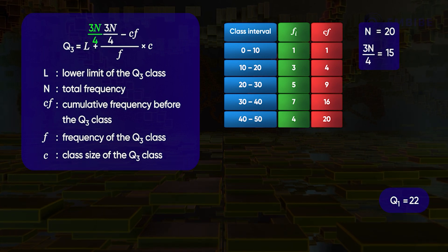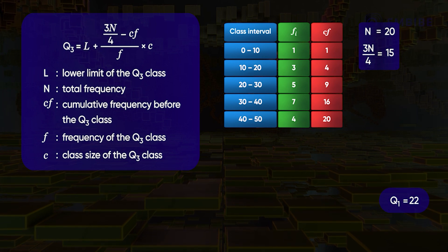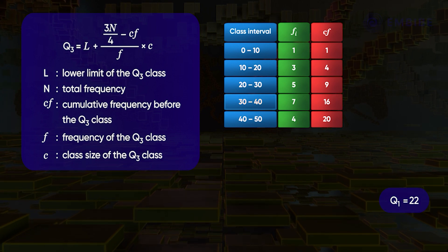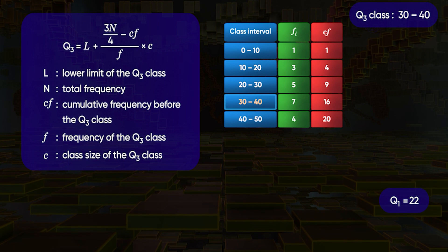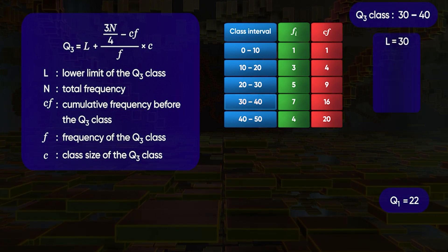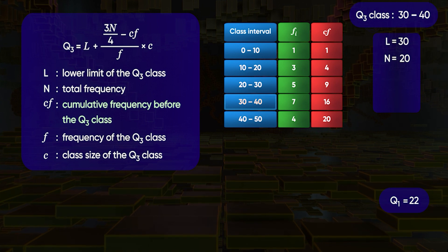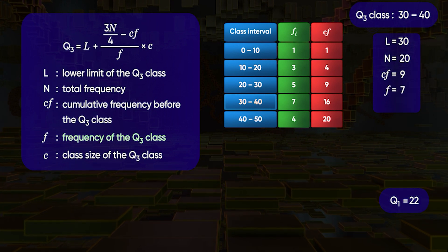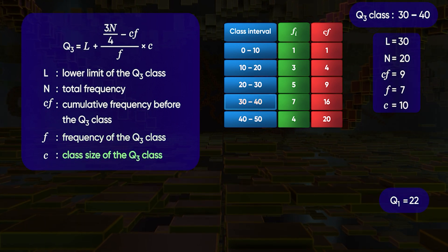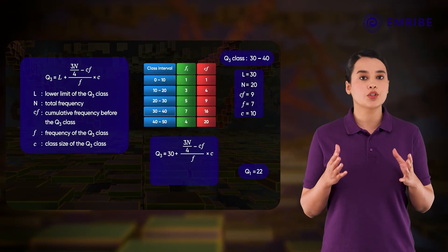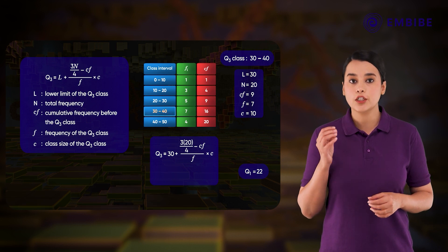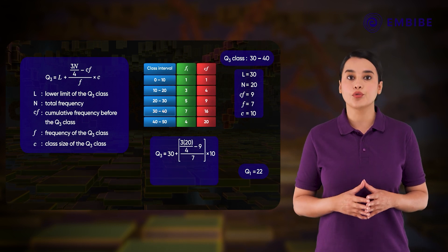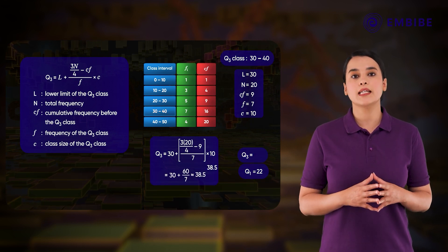The upper quartile Q3 is found similarly. The class interval containing the (3/4 × 20 =) 15th observation is 30–40, so the Q3 class is 30–40. The lower limit is 30, the cumulative frequency before the Q3 class is 9, the frequency of the Q3 class is 7, and the class size is 10. Q3 = 30 + [(3/4 × 20 − 9) / 7] × 10 ≈ 38.57.